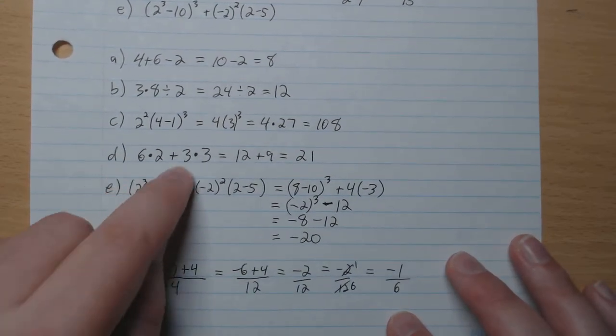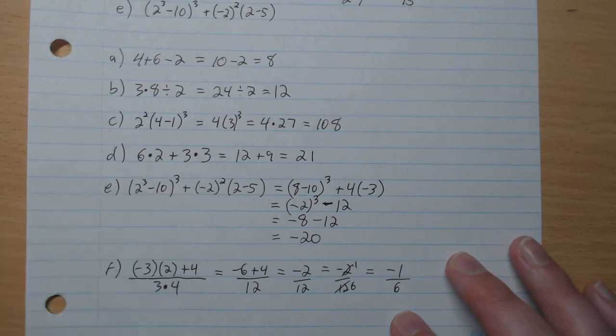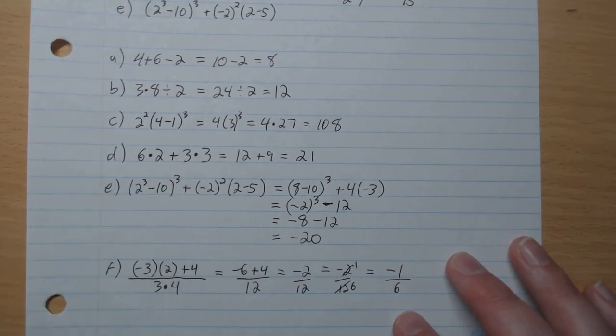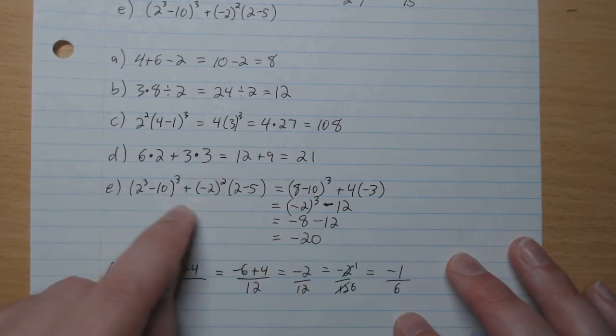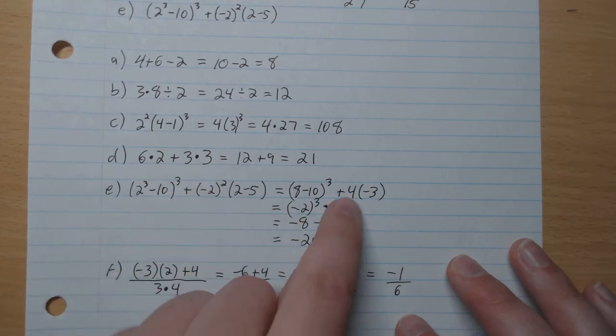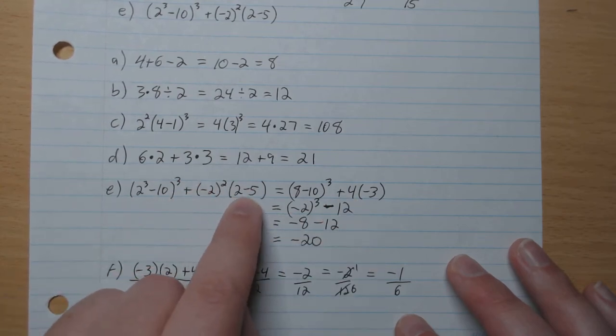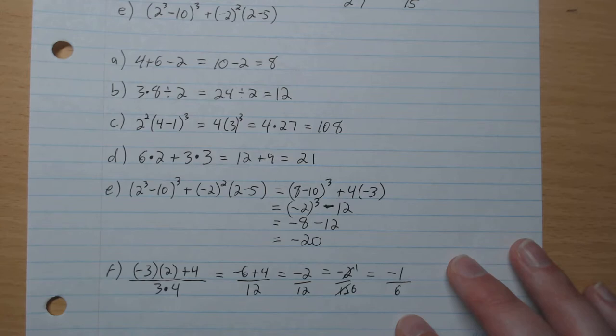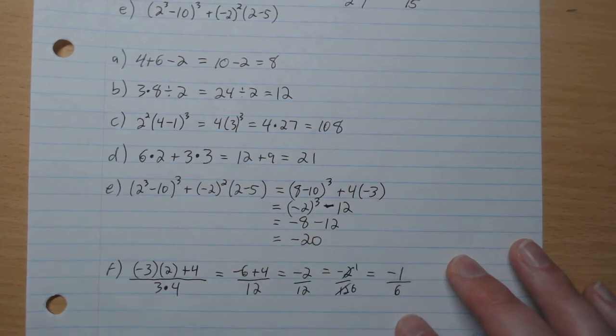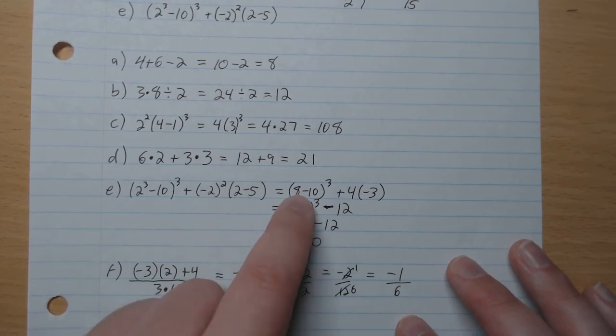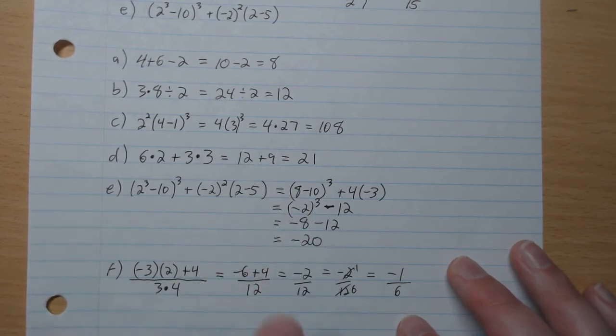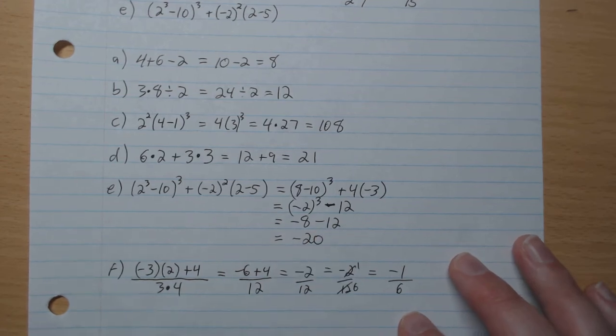E. Here we have an exponent within the brackets. So we're doing the brackets first. And within the brackets, the 2 cubed comes first. So this is 8 minus 10, negative 2 squared. All of negative 2 is being squared with the bracket. So that's 4. 2 minus 5, negative 3. 8 minus 10, negative 2. So negative 2 cubed minus 12. 4 times negative 3 is minus 12. Negative 2 cubed is negative 8. Gives negative 8. Minus 12. Gives us negative 20 as our final answer.